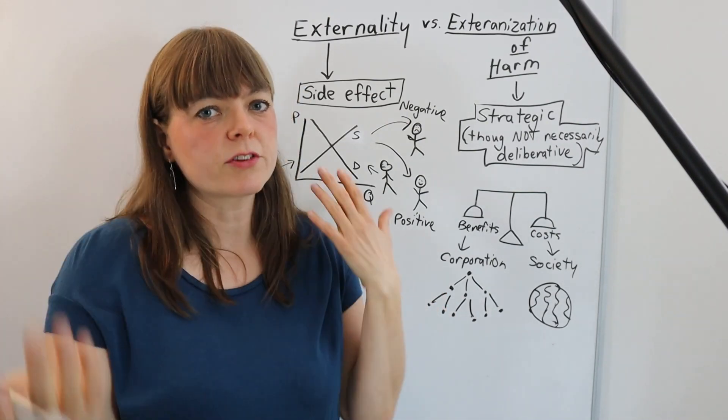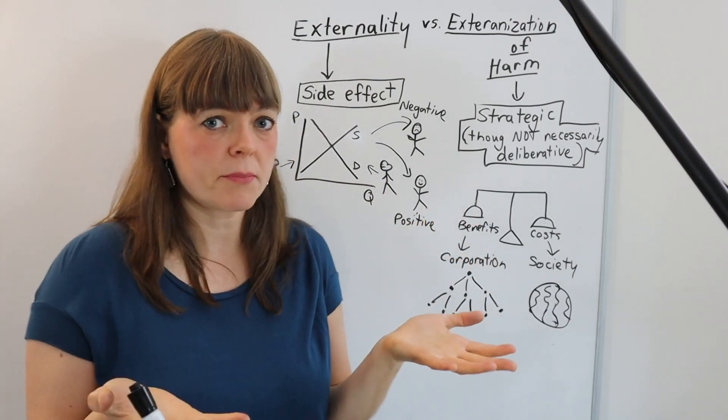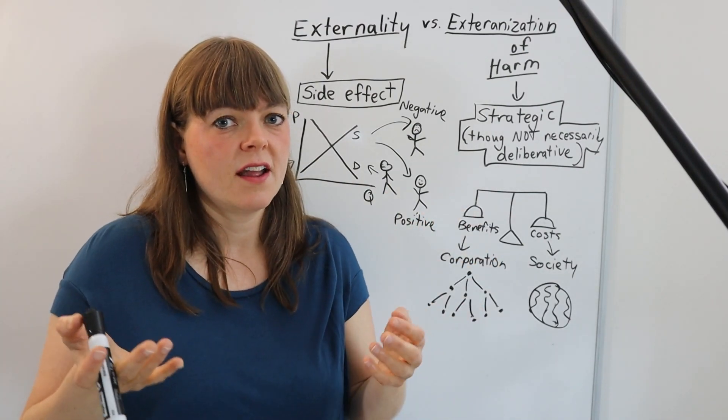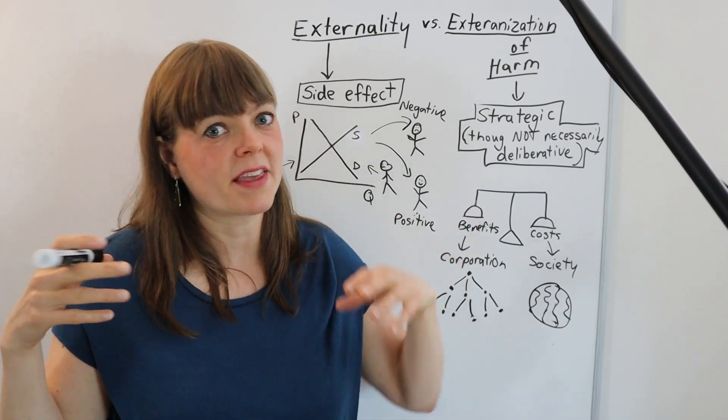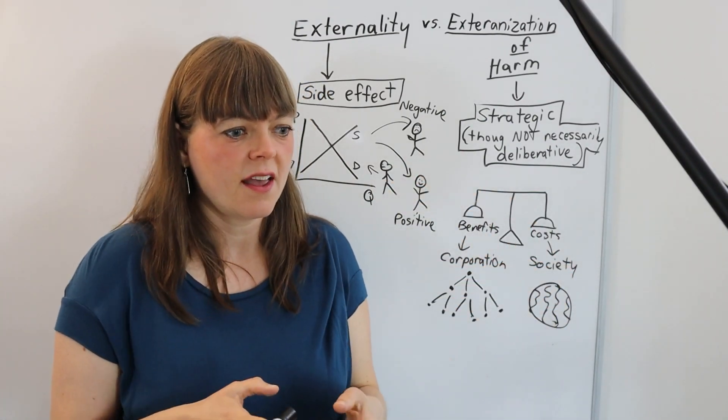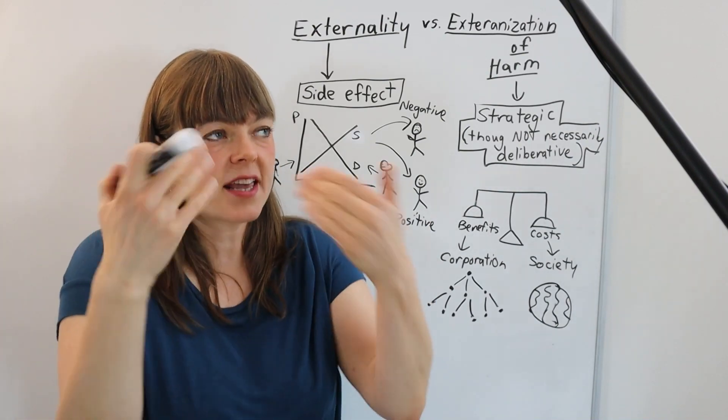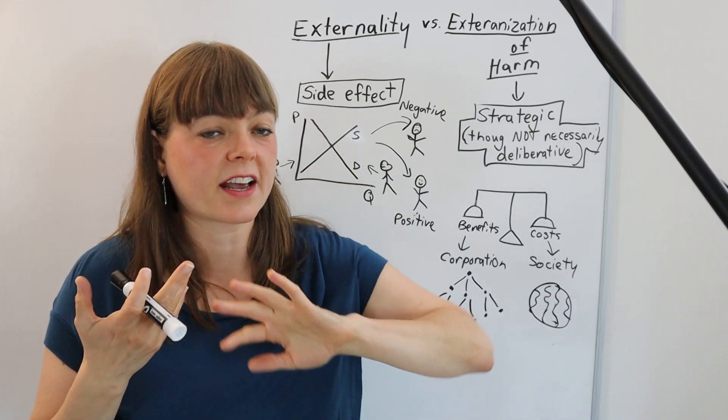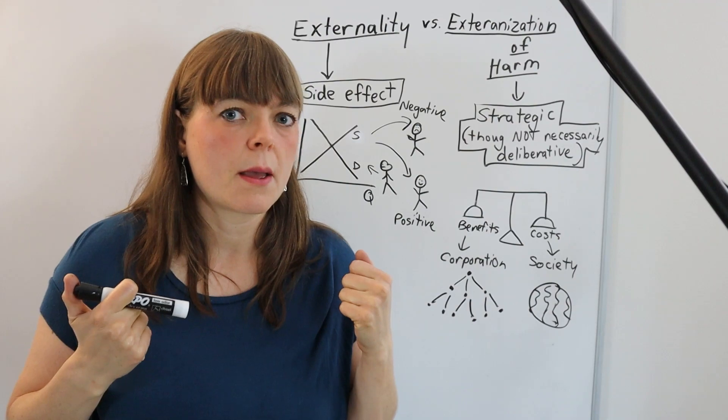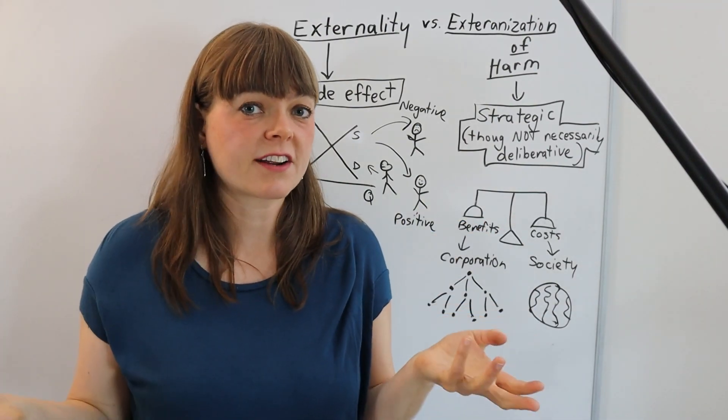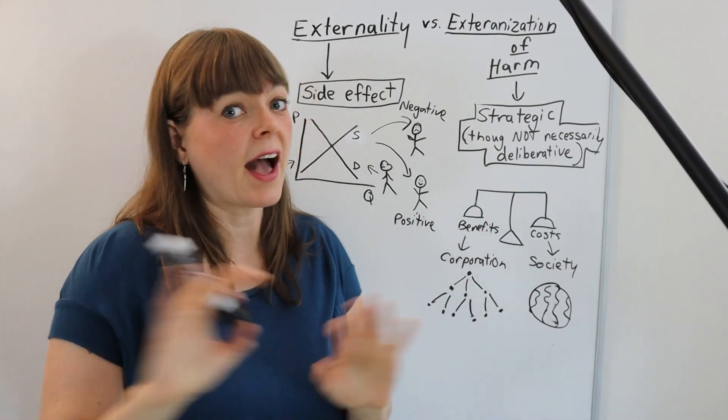Like there could be an evolutionary process where it's just that the companies that make this decision, they grow. The companies that make the other decision, they shrink. And maybe they don't realize you're growing because you're taking in the benefits to yourself and externalizing the harms.